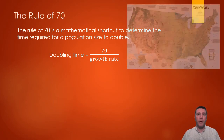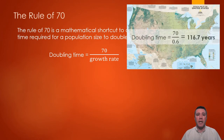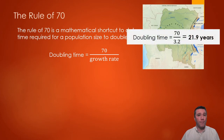For example, the current population in the United States is approximately 330 million, and its annual growth rate is 0.6%. Therefore, the population will double to 660 million in about 117 years. For the approximately 91 million people in the Democratic Republic of the Congo, the growth rate is 3.2% per year. So, in just about 22 years, there will be nearly 180 million people in that country.